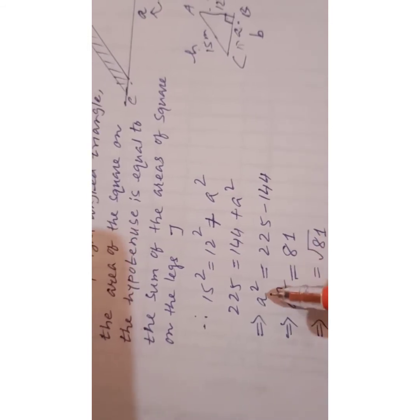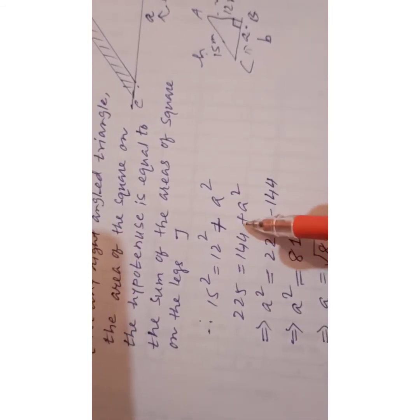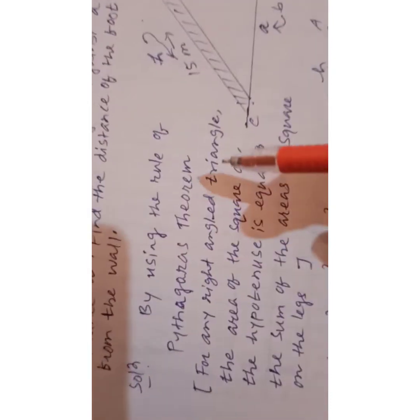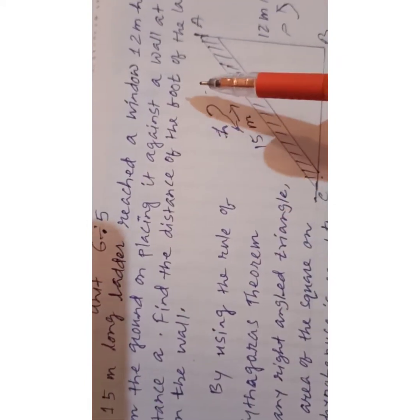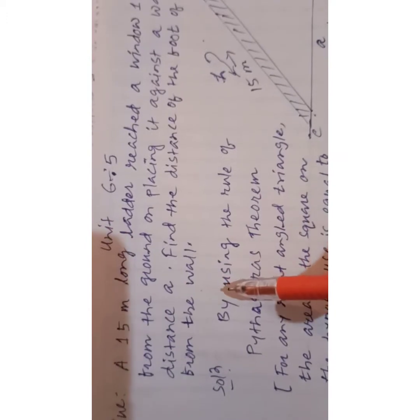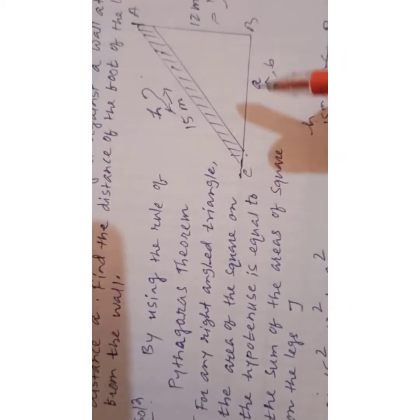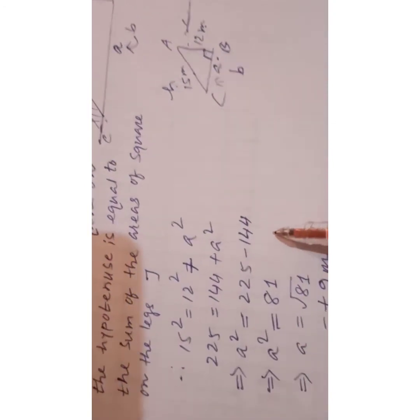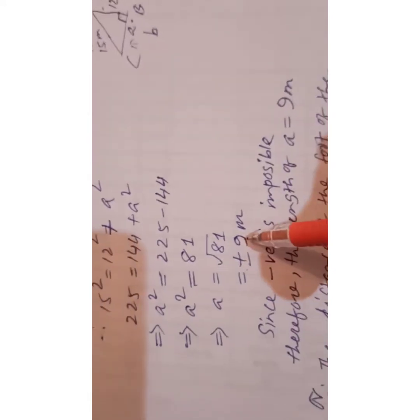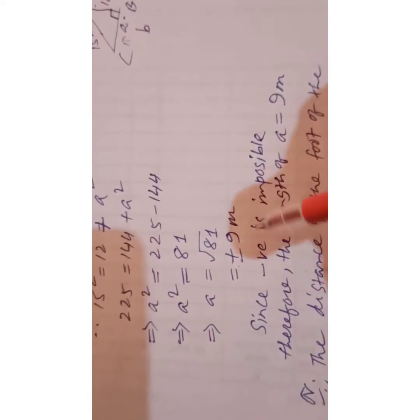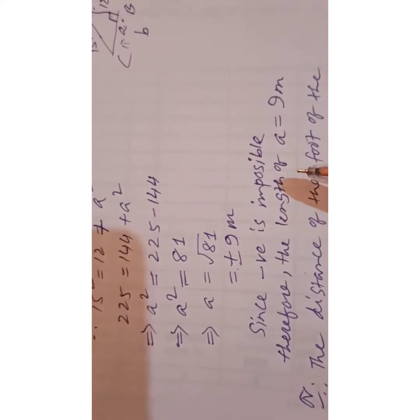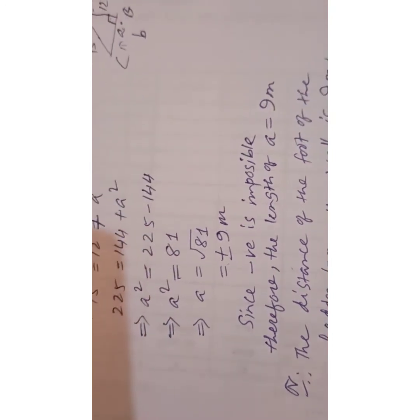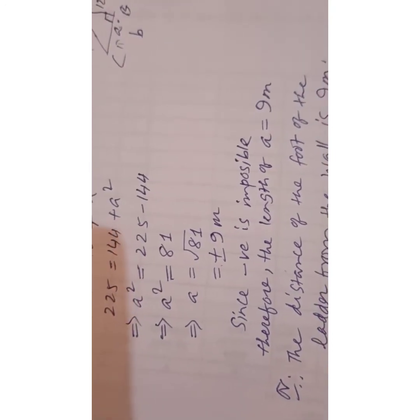After transporting its position and bringing terms to the other side, we get a² = 15² - 12². This gives us plus or minus 9. Since negative distance is impossible, the distance will be 9 meters.